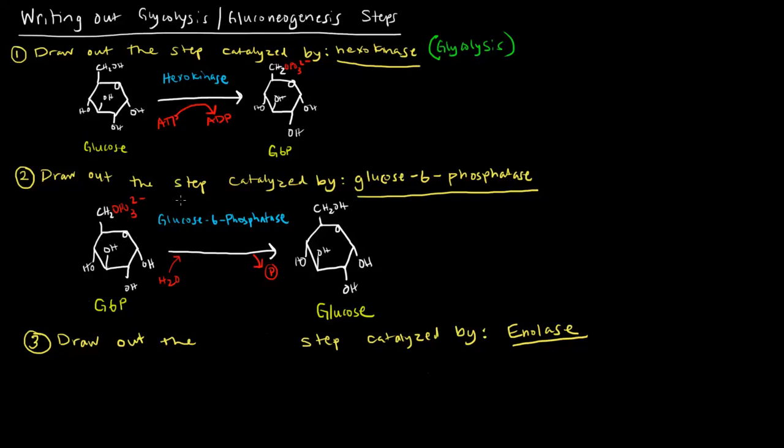Likewise, if I'm told to draw the step catalyzed by glucose-6-phosphatase, then I know that I'm going from G6P to glucose, adding water, getting a phosphate out, and that's the only step that glucose-6-phosphatase is going to catalyze. I know this step is specific to gluconeogenesis and it's only in gluconeogenesis.